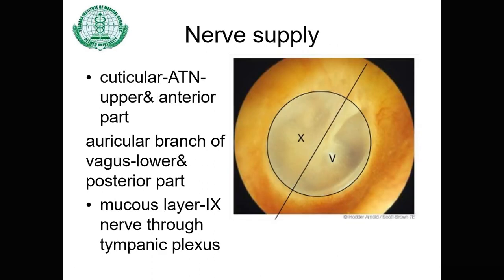The nerve supply of the tympanic membrane: the cuticular layer is supplied by the auriculotemporal nerve in the upper and anterior part of the membrane, while the auricular branch of the vagus nerve supplies the lower and posterior part. The mucous layer is supplied by the glossopharyngeal nerve through the tympanic plexus.